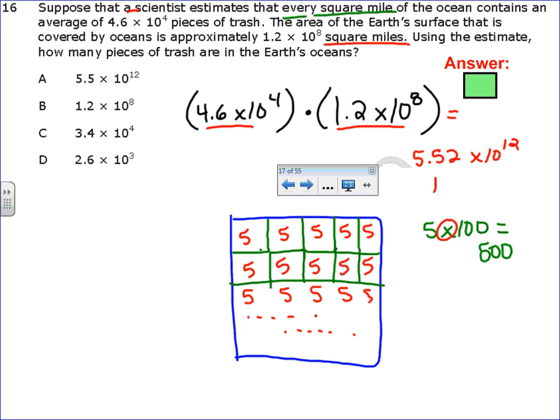Now, remember, if you get 5.52e to the 12th, e is the way the calculator writes times 10, and whatever comes after it is your exponent, which means that my answer is A.